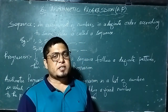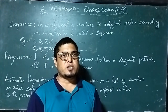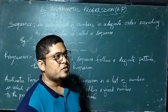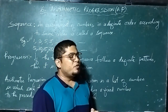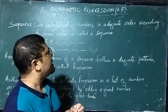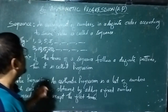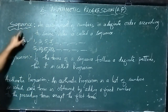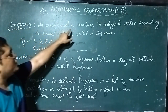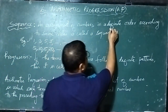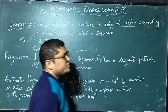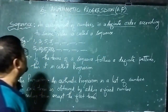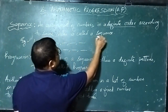Maths is very easy, dear students, if you know the concepts. So try to understand the concept, and once you understand the concept you will find it very easy. Before we go through the chapter, let us understand some points. First, let us understand sequence. What is sequence? Sequence is an arrangement of numbers in a definite order — according to some rules — and that is called a sequence.